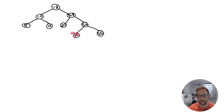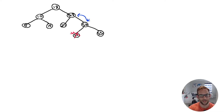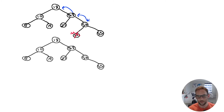At 50, we check if it's balanced. Left subtree height is 0, right subtree height is 1; 0 minus 1 is negative 1 — balanced. Going up to 28: left subtree height 1, right subtree height 2; 1 minus 2 is negative 1 — balanced. At 18: left subtree height 2, right subtree height 3; 2 minus 3 is negative 1 — balanced. The tree is balanced after this deletion.